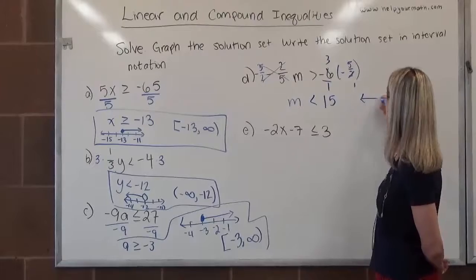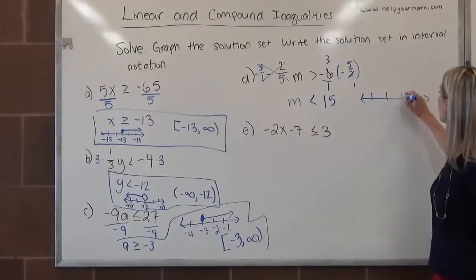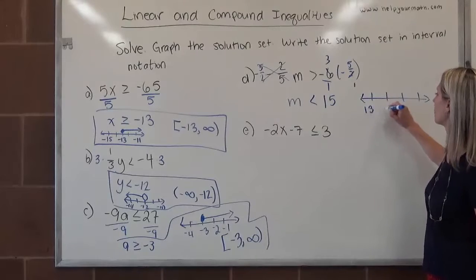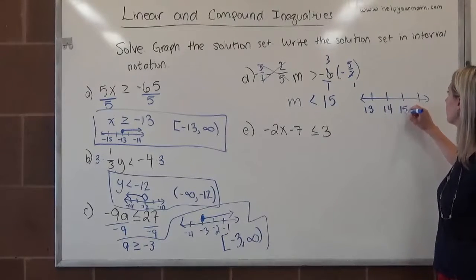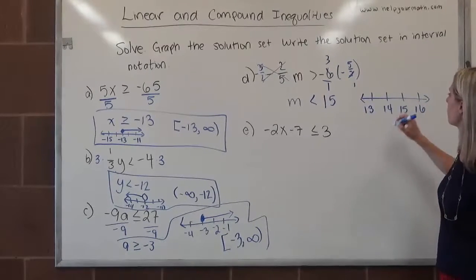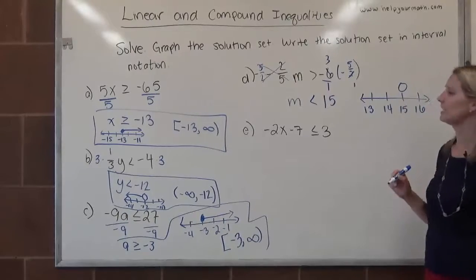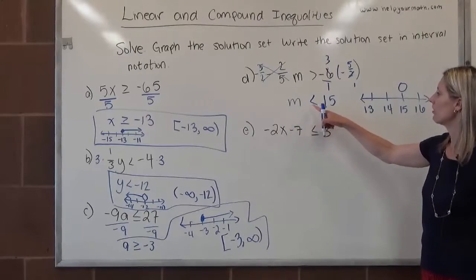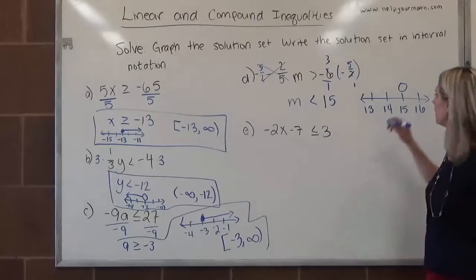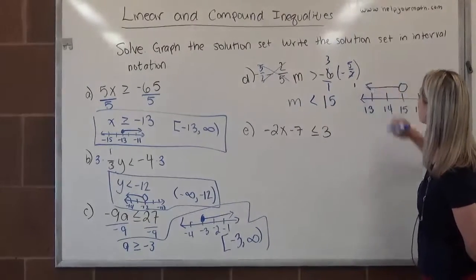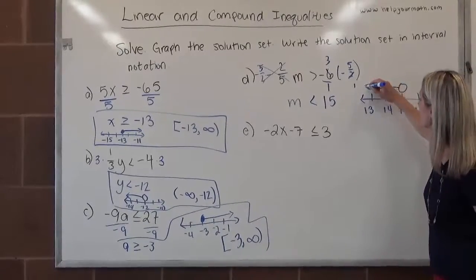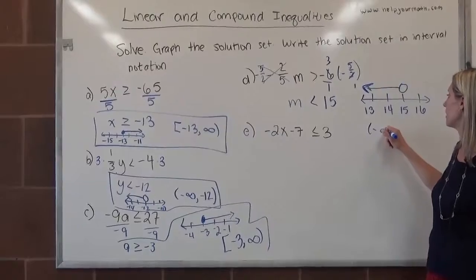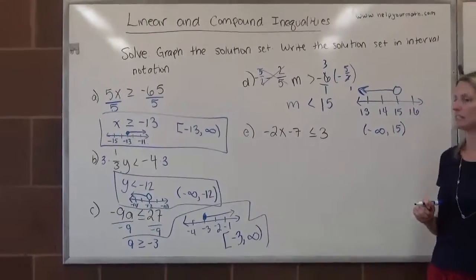For the graph, on our number line we just need to make sure that 15 is somewhere: 13, 14, 15, 16. It will be an open circle over 15, indicating 15 is not part of the solution set. We are looking for numbers smaller than 15, which are to the left. In interval notation, since there is no smallest number, it starts at negative infinity and goes up to 15 — where we do not include 15.